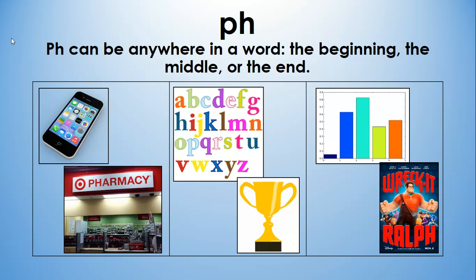PH is one of the digraphs that we teach last, and it can appear at the beginning, middle, or end of words — words like phone, pharmacy, alphabet, trophy, graph, and Ralph. When students are first starting to write and actually encode words by sounding them out themselves, you'll see a lot of the letter F substituting where we would spell PH words. It's not wrong that they're hearing the F sound when they're first starting, but we do want to show them that conventional spelling.